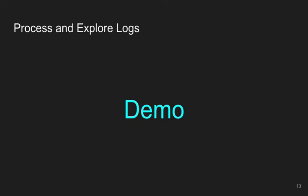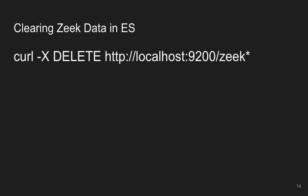Back to the slides: to delete all your imported data, which I need to do often when switching to different data sets, it's very simple — use a curl command that sends a DELETE RESTful request to zeek* which deletes everything with that prefix. You can be fancier: if you used the automatic index naming method, it'll have a zeek_ prefix plus a date, so you can delete just a certain day or even a particular hour by specifying the pattern.